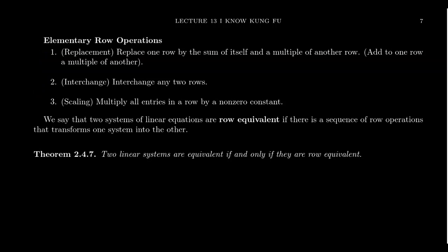If you have two linear systems, we say that they're row equivalent if there's some sequence of row operations that transforms one linear system into the other. Since we can represent linear systems using augmented matrices, we perform the elementary row operations to a matrix, transforming it into a new matrix, and those two matrices will be row equivalent.